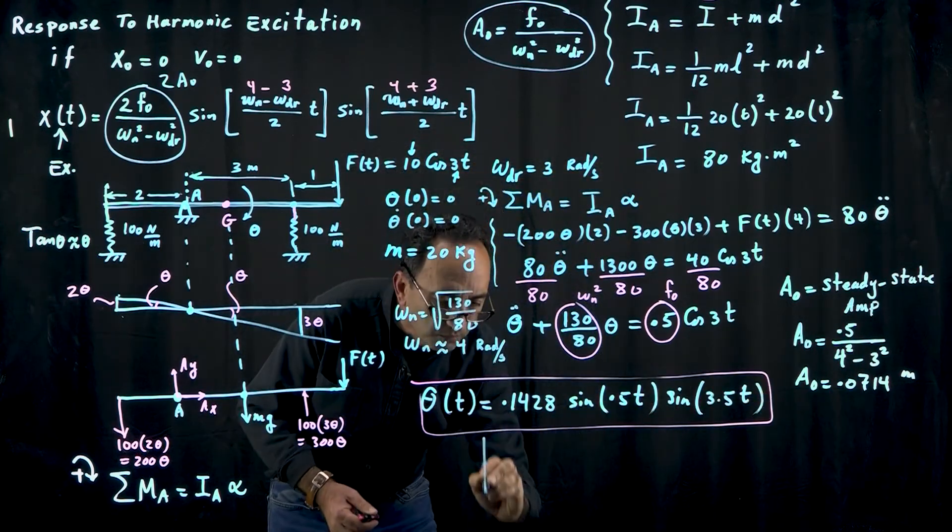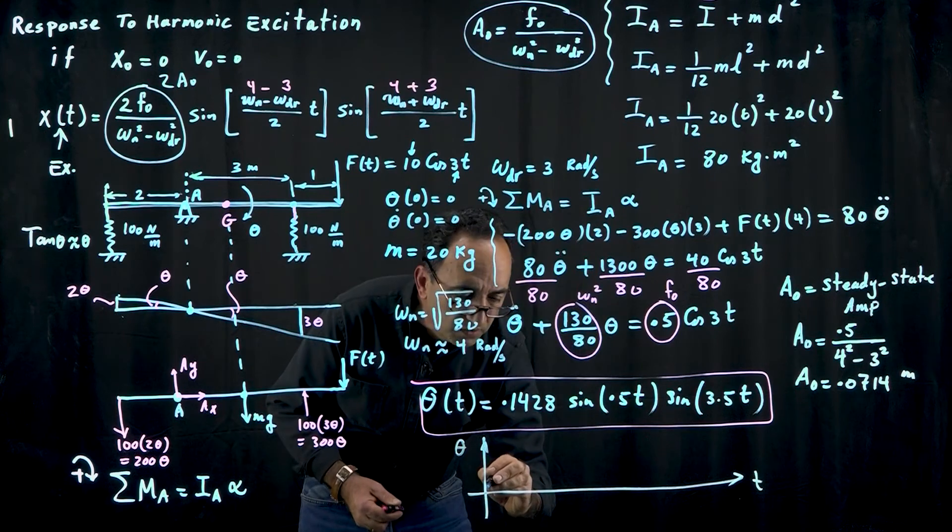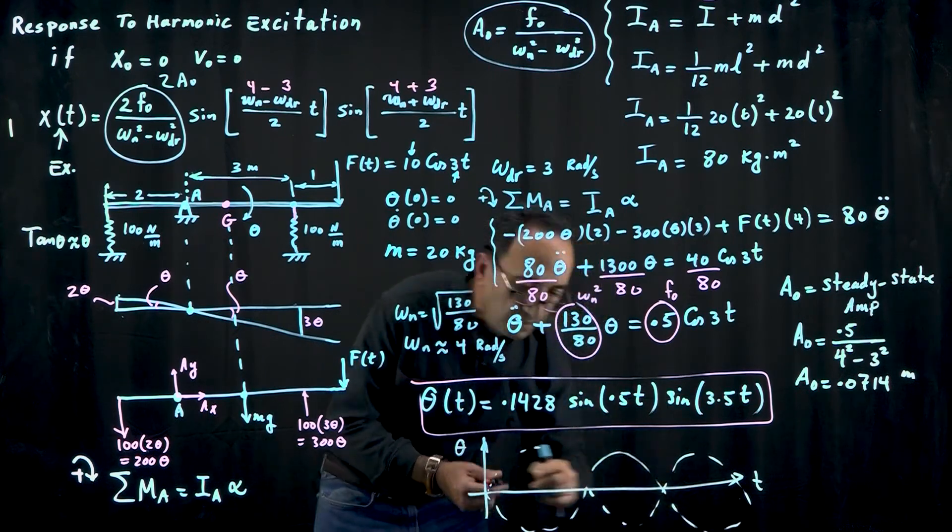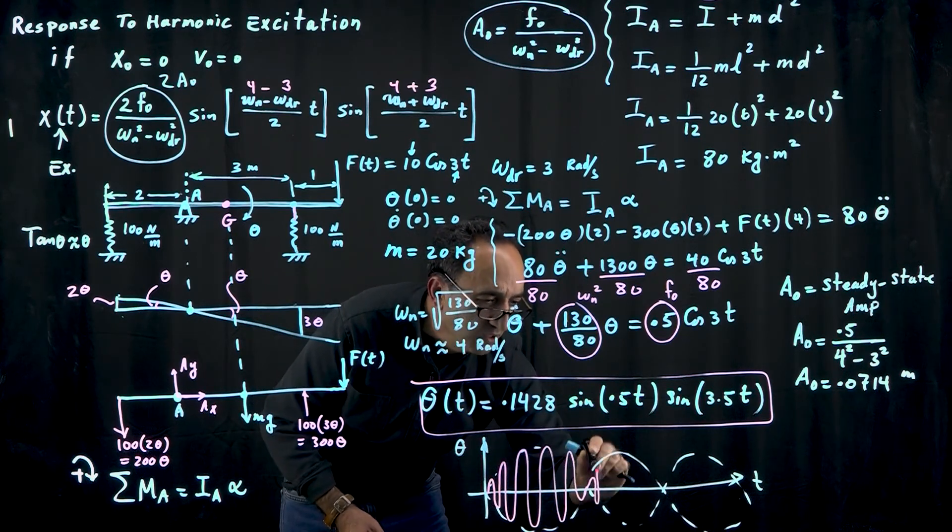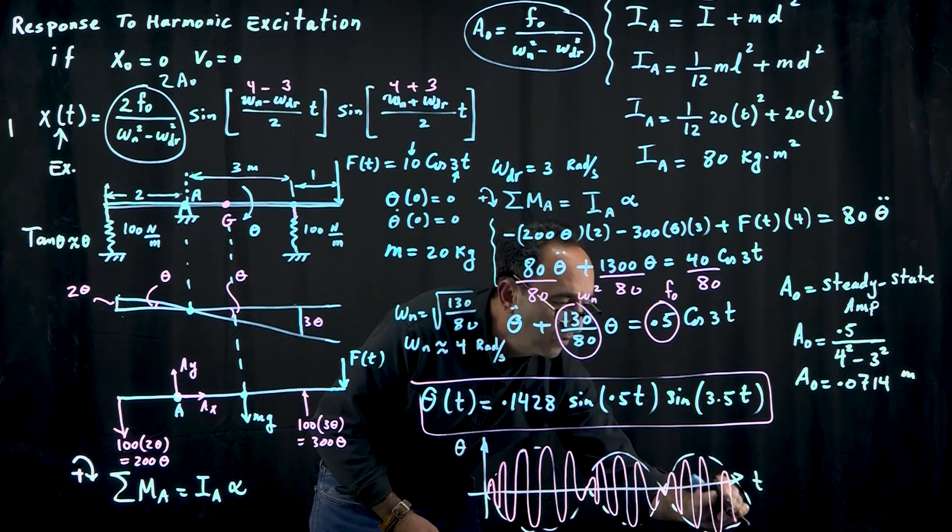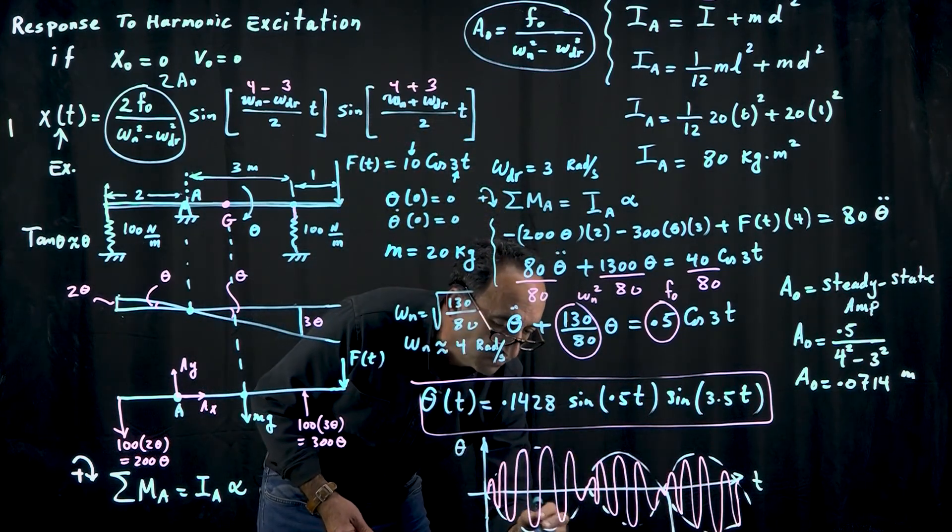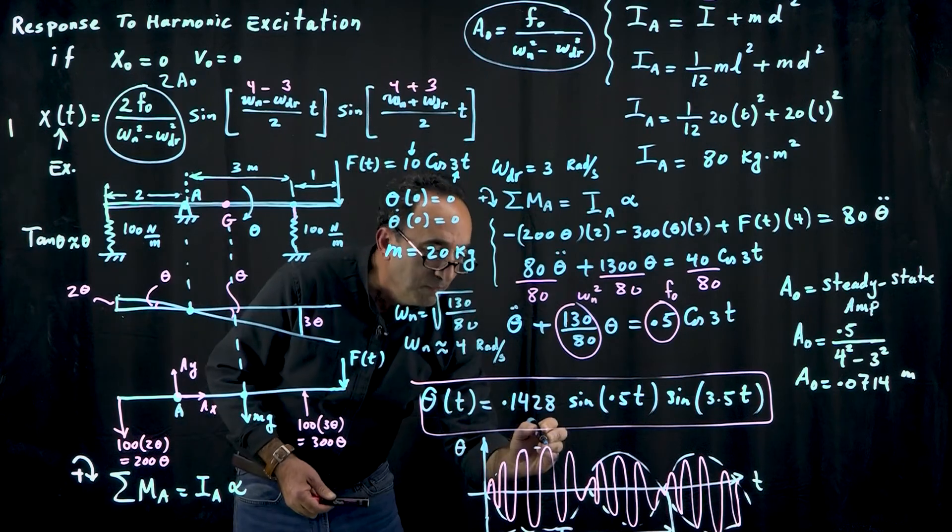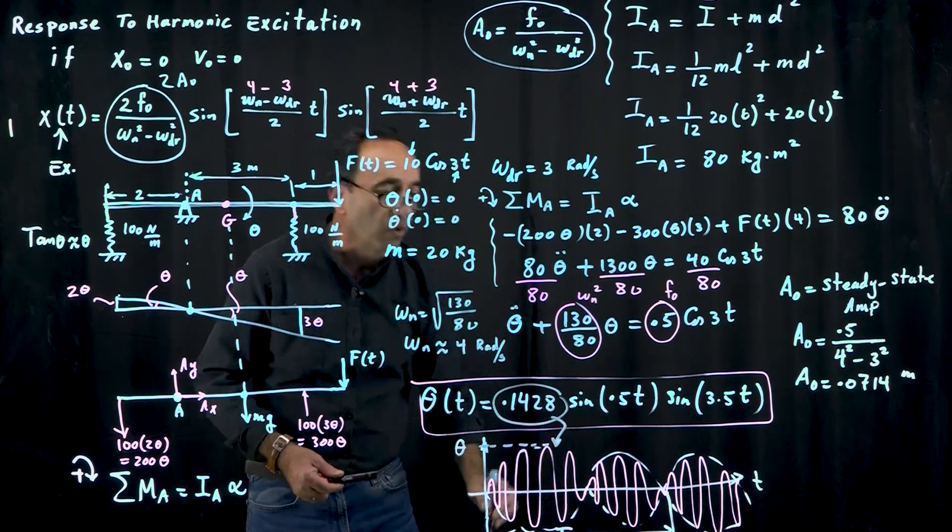If you plot theta versus time, you should get something like this. You will see a sine wave riding on another sine wave. The omega_n and omega_dr are very close to one another, so you could actually see the beat phenomenon here. This is known as a beat frequency here, or period of the beat T sub b. The maximum amplitude that you can get to is this number 0.1428. I hope you like this video and hopefully come back with more examples later on.